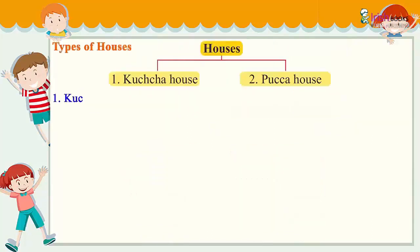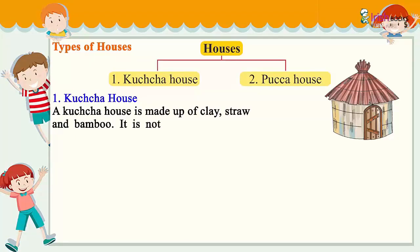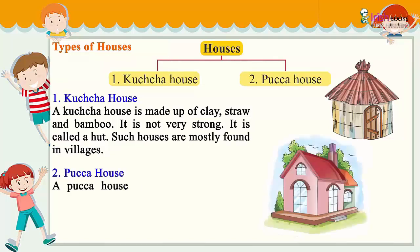Types of houses. There are two types of houses: 1. Kaccha House and 2. Pakka House. A kaccha house is made up of clay, straw and bamboo. It is not very strong. It is called a hut. Such houses are mostly found in villages.